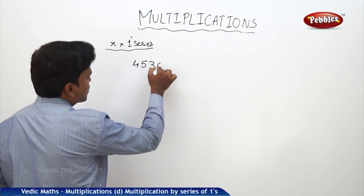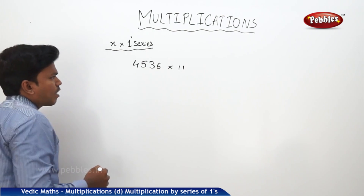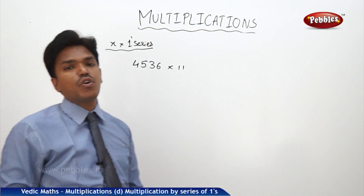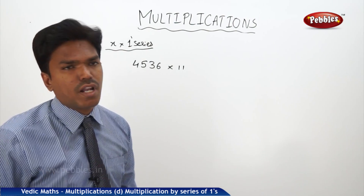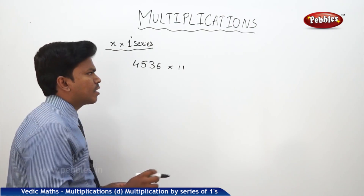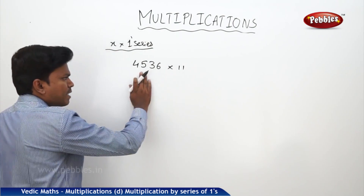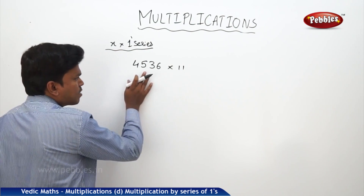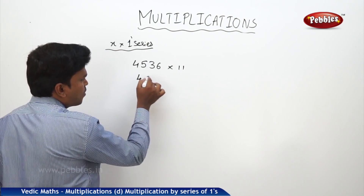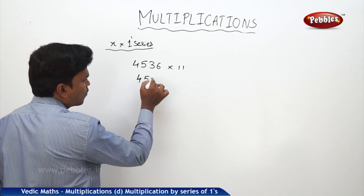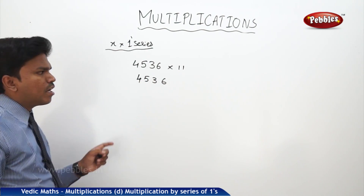Suppose 4536 into 11. I want to multiply the number 4536 by 11. Whenever you are multiplying a number by a series of 1s, simply drop that number as it is first. The given number is 4536 — I have dropped the number as it is.